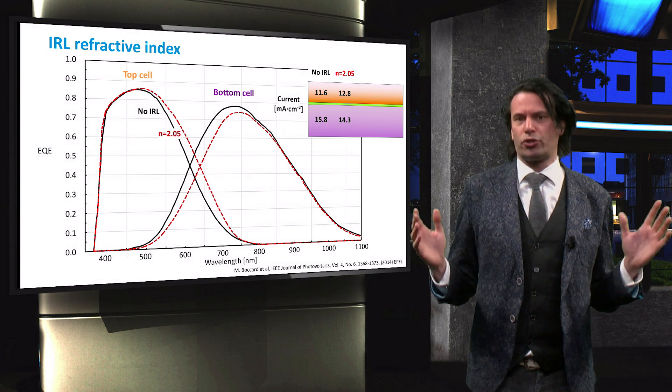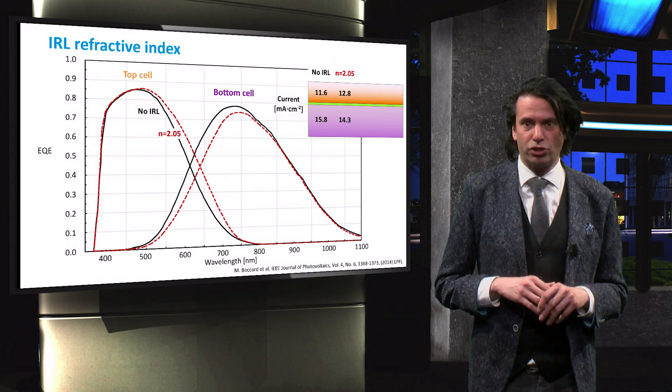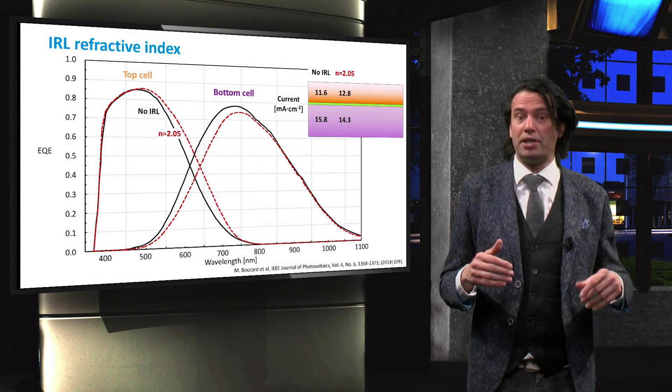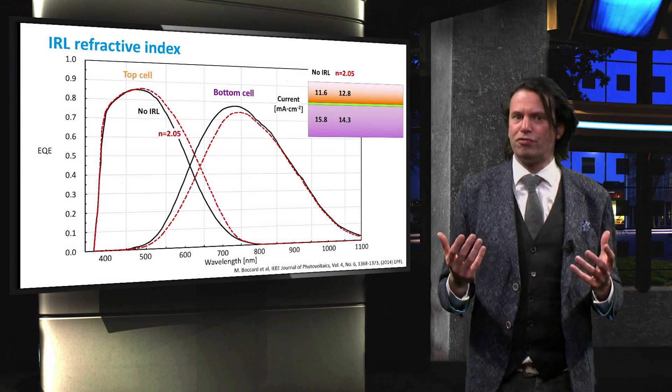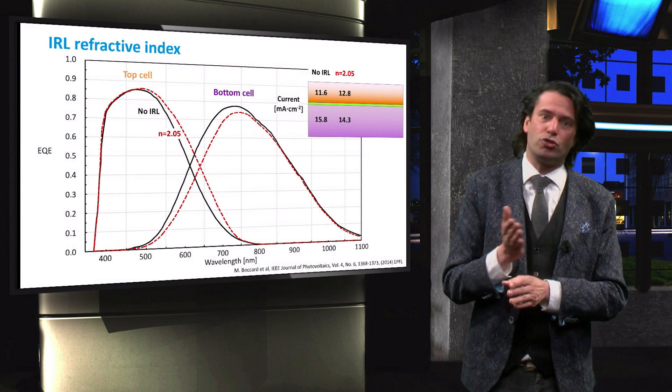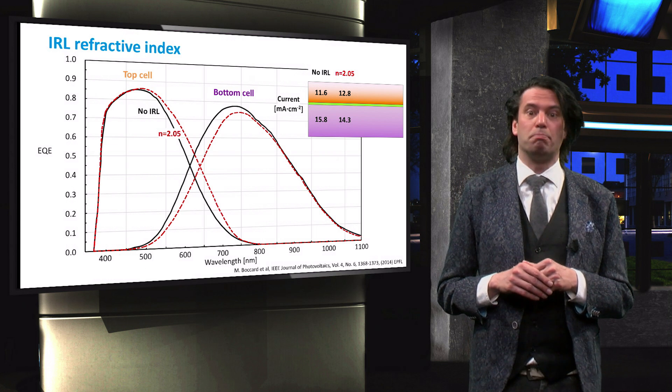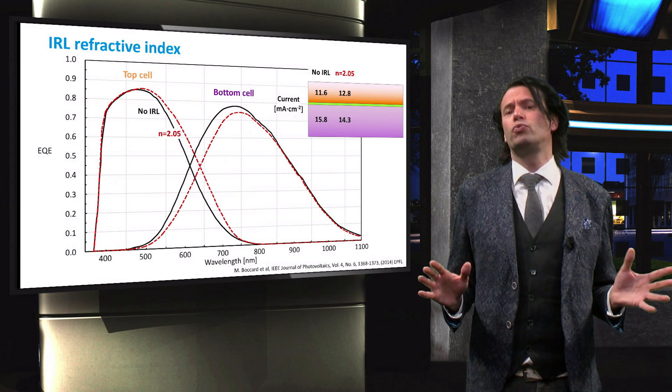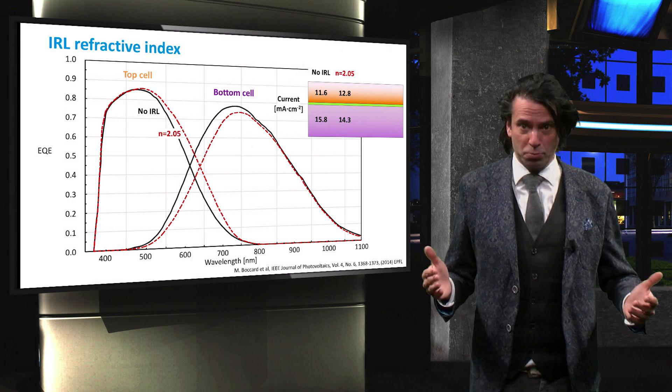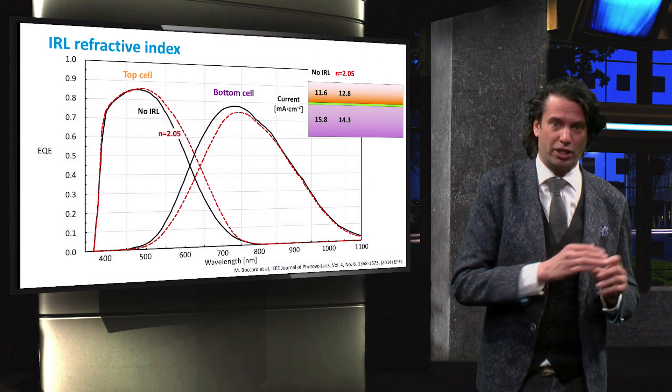Naturally, the current transfer from the top to the bottom cell is not without loss, since some of the light is absorbed by the intermediate reflective layer. Furthermore, a fraction of the photons reflected back into the top cell has an energy above the microcrystalline silicon band gap, but below the amorphous silicon band gap. These photons would have been absorbed by the bottom cell, but are now transmitted from the front side of the cell.